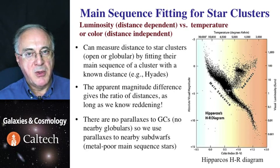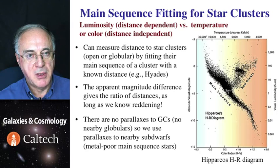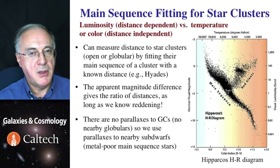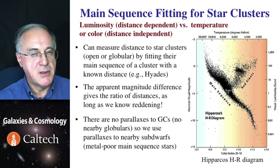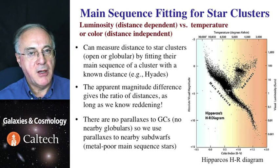By measuring distances to a number of stars using either of these two techniques, we can calibrate the Hertzsprung-Russell or color-magnitude diagram for stars. It is a plot of stellar luminosity versus temperature, where temperature is sometimes measured through color. Stellar luminosities are distance dependent according to the inverse square law from given measurements of apparent brightness, but temperature measured from spectra or colors is not — a star will have the exact same temperature no matter how far it is. So once we calibrate the main sequence on this diagram, if we can measure stellar colors or temperatures, we can read off their absolute magnitudes, and from absolute and apparent magnitudes, we can find out how far they are.